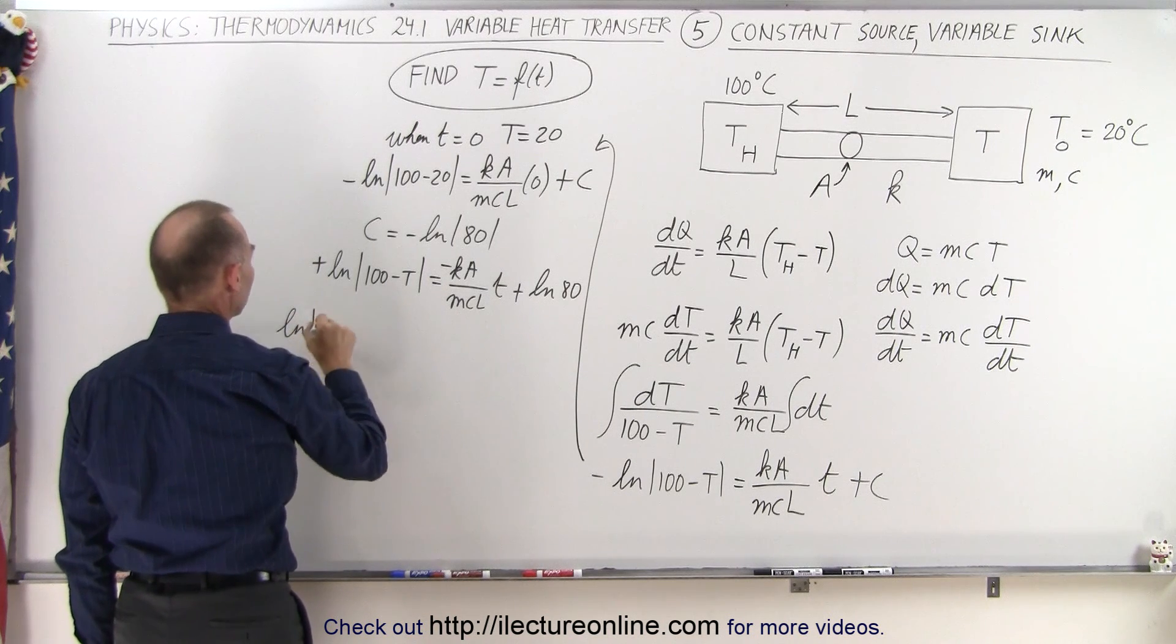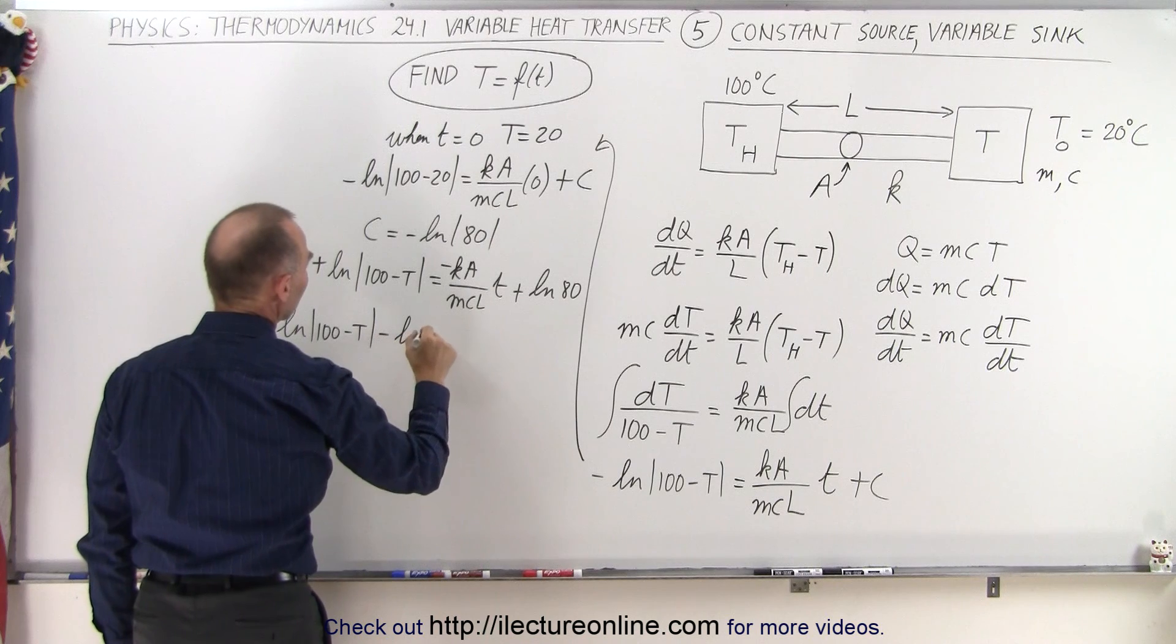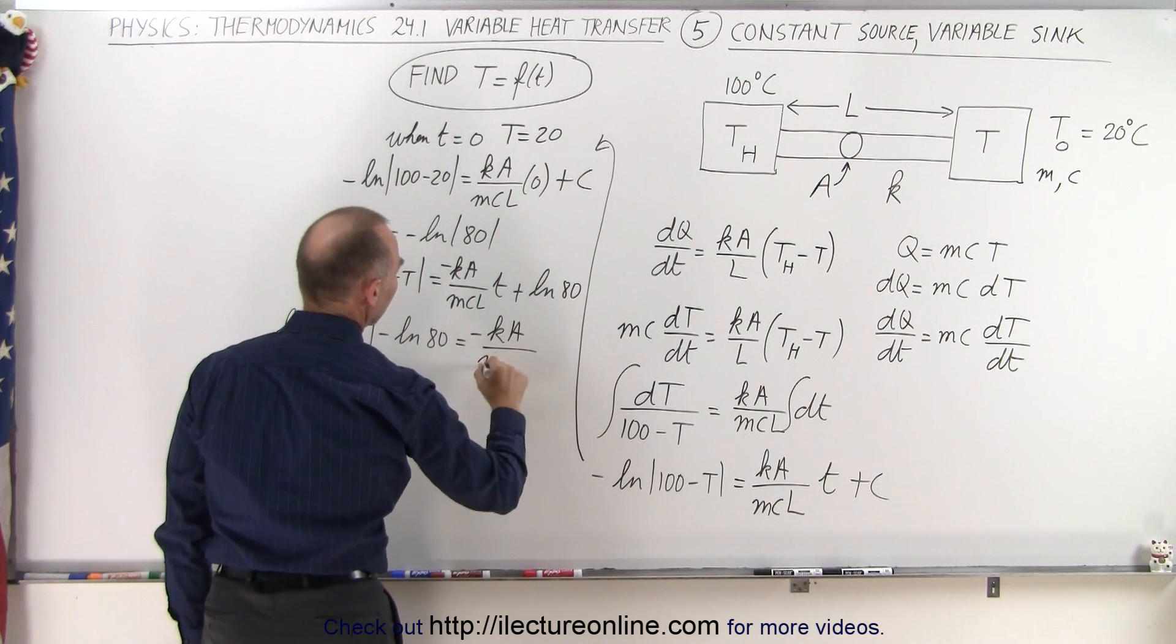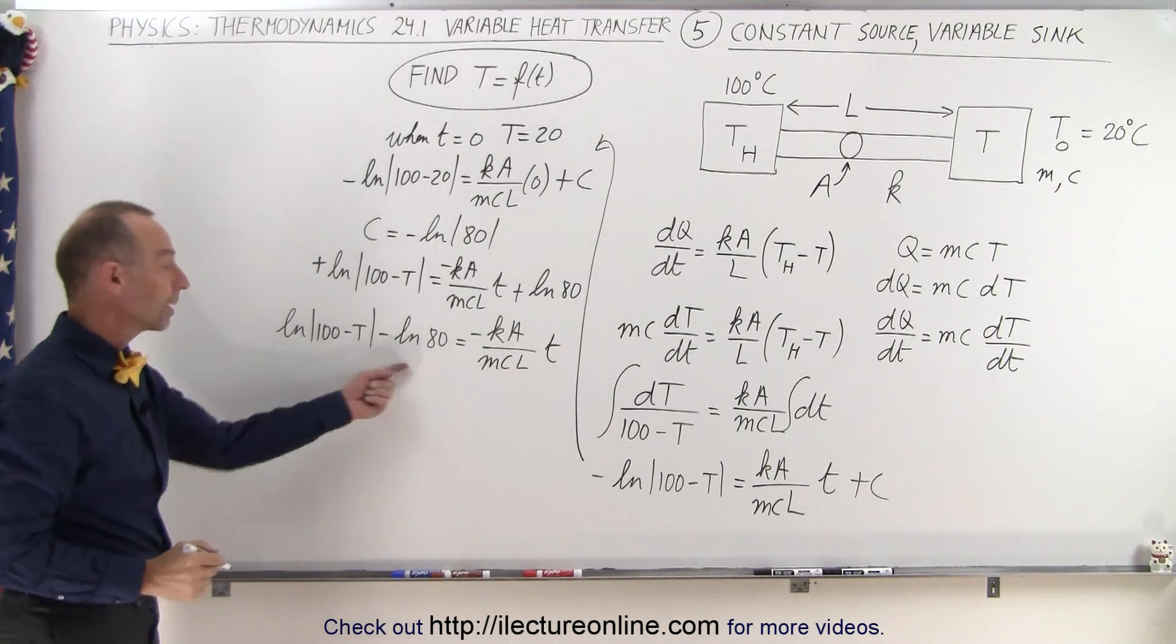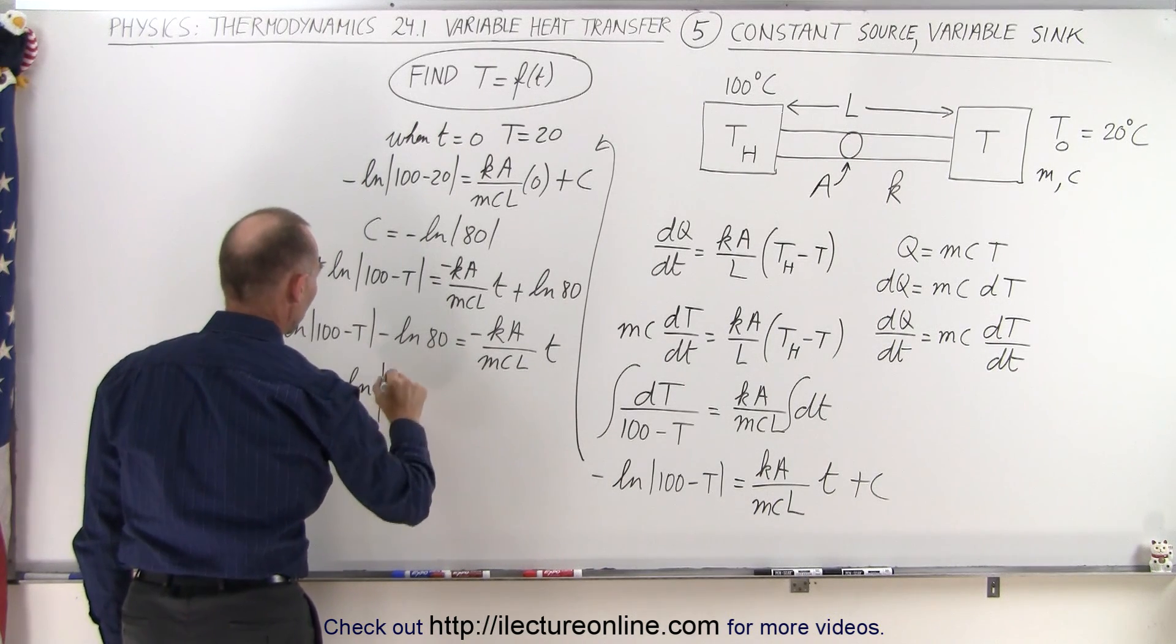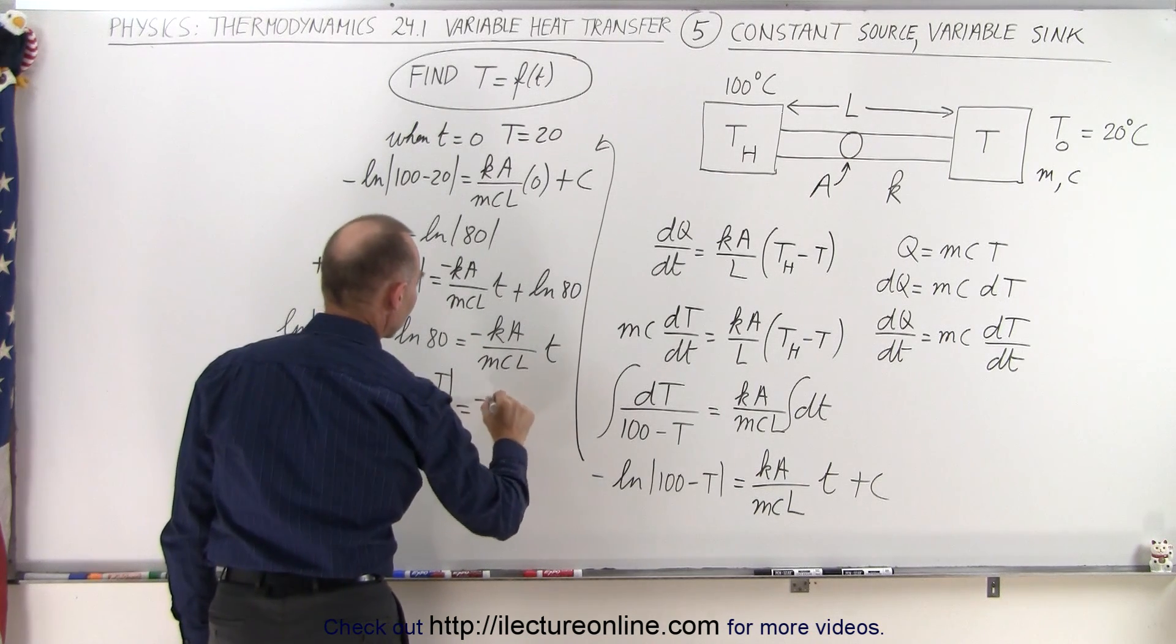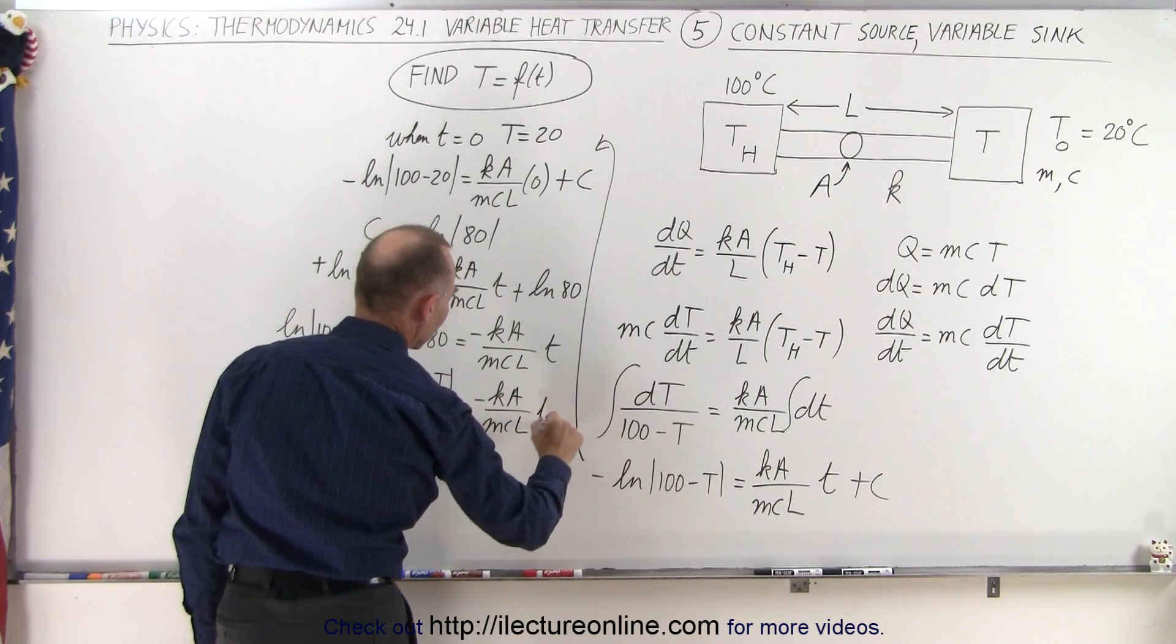I end up with the natural log of 100 minus T minus the natural log of 80 is equal to minus KA over MCL times T. And then I can combine this because this can be written as the natural log of 100 minus T over 80 is equal to minus KA over MCL times T.